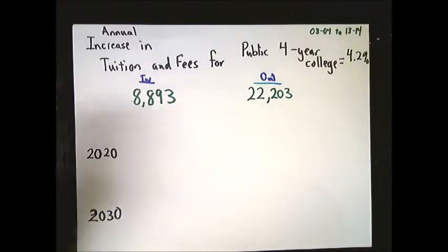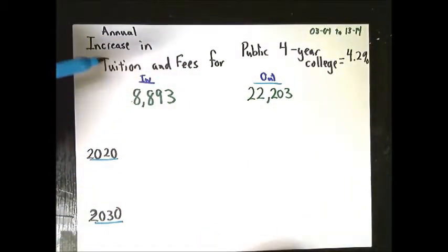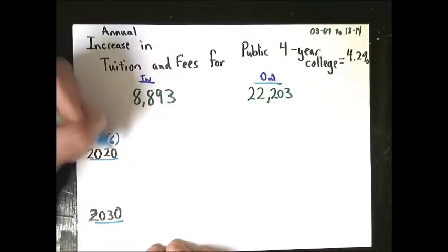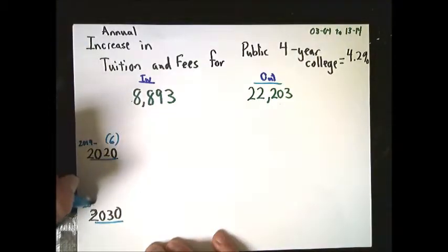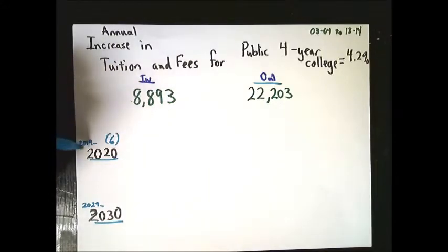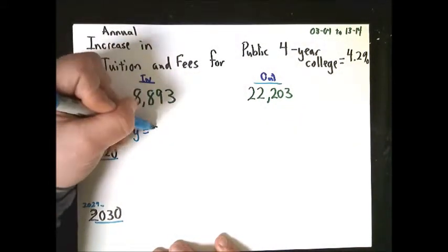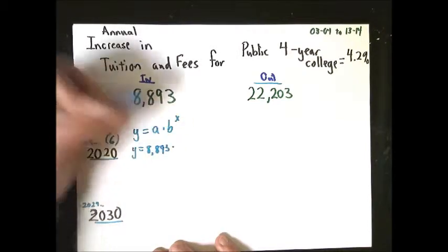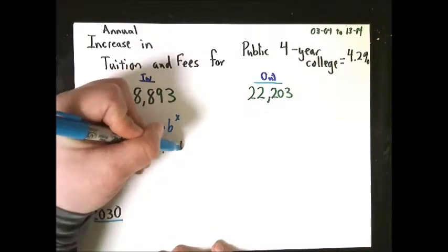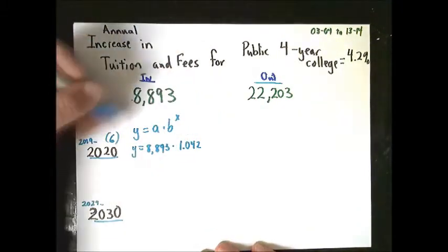Now, in the first question, I want to know what the likely tuition and fees are going to be in 2020, and then I'm going to do it in 2030. We're doing 2014, so we'll say that's six years again. So I guess it's the 2019-20 school year. If you want, you can do it with 7, and it'll be 2020-2021. Whatever you feel like you need to do is fine. I'll set up the same basic equation. My starting point, of course, is $8,893. My growth factor here at 4.2% would be 1.042. Don't put 1.42. That would be 42%.